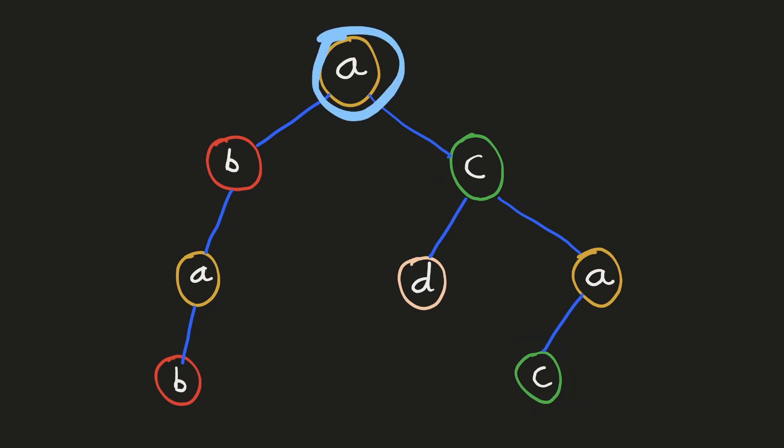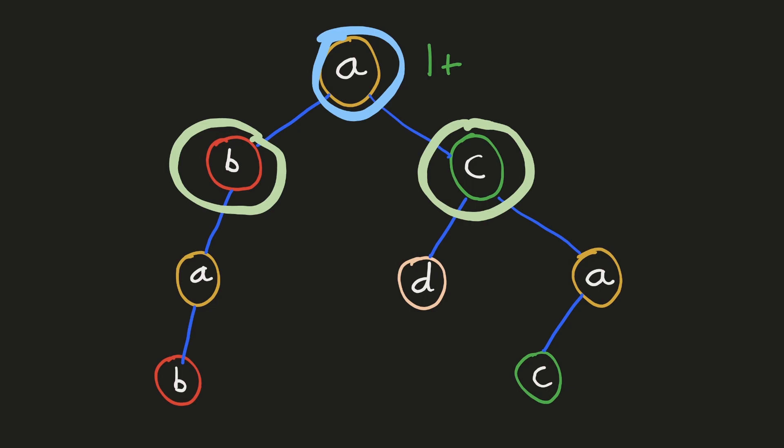Let's see how we can find the result for this node. Since the subtree of each node includes itself, there will be at least one node with the same label. For finding other nodes in the subtree with the same label, we have to find all the nodes in the child subtrees who have the same label. We can do this recursively for subsequent child nodes and count all occurrences of the label. Both these subtrees have one occurrence of 'a', so the result will be 3 for this node.